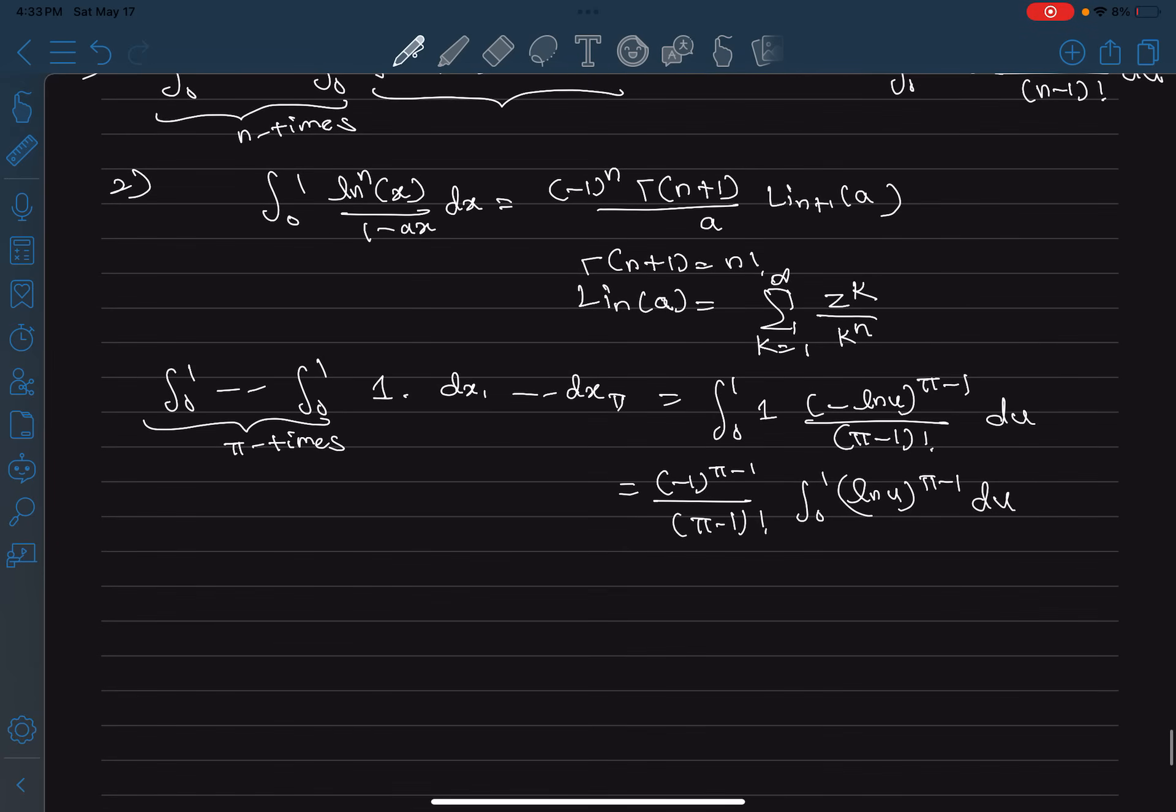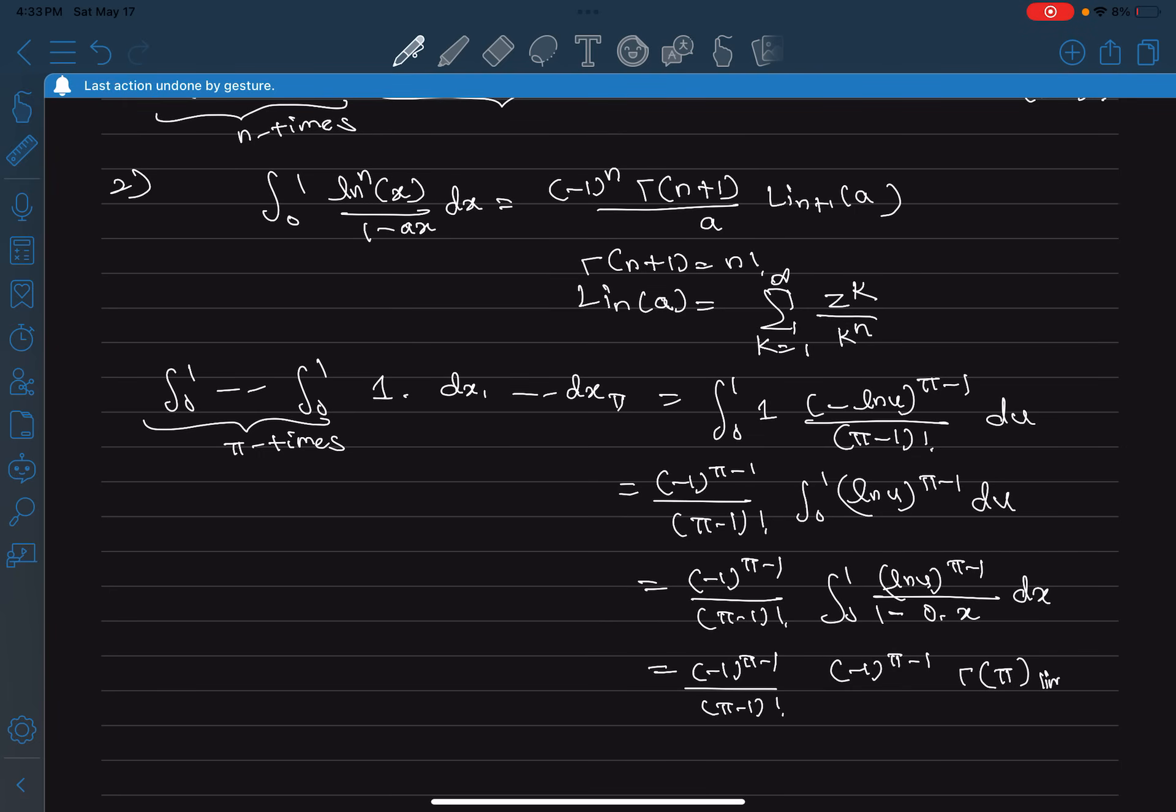Now you can use the second formula by making that a be 0, so this can be written as π minus 1 factorial, integral 0 to 1, ln u to the power π minus 1 by 1 minus 0x dx. Now if we use the formula we get negative 1 to the power π minus 1 by π minus 1 factorial, and this will be negative 1 to the power π minus 1 times gamma of π by a. In this case a is 0, but if I write a as 0 that makes it undefined, so I will actually write a limit: limit a goes to 0 of li_π of a by a.